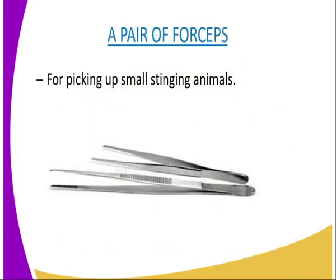We have another apparatus which is a pair of forceps. The pair of forceps is used for picking up small stinging animals, for example bees. Using forceps helps you avoid handling the specimens with your bare hands.